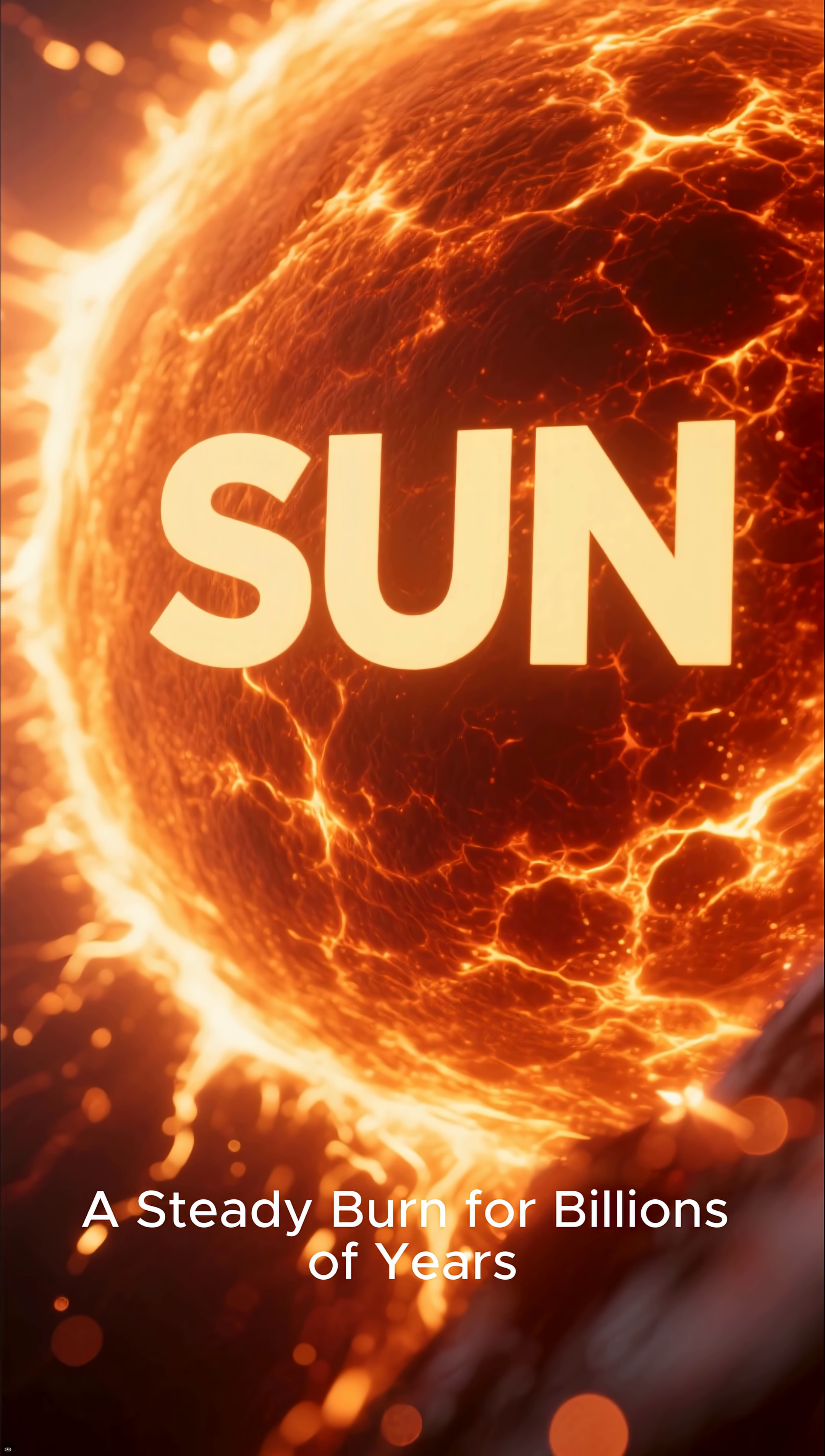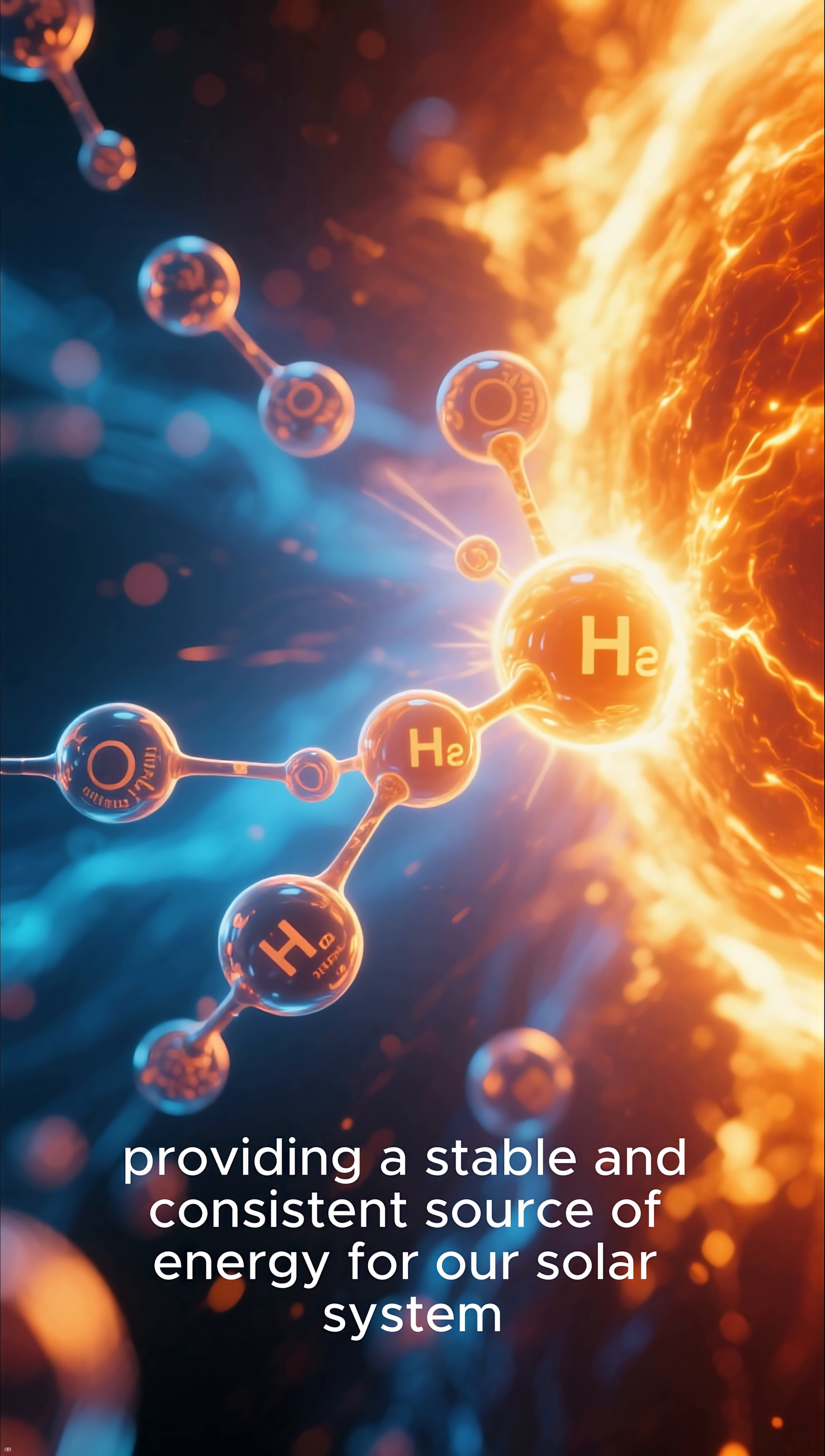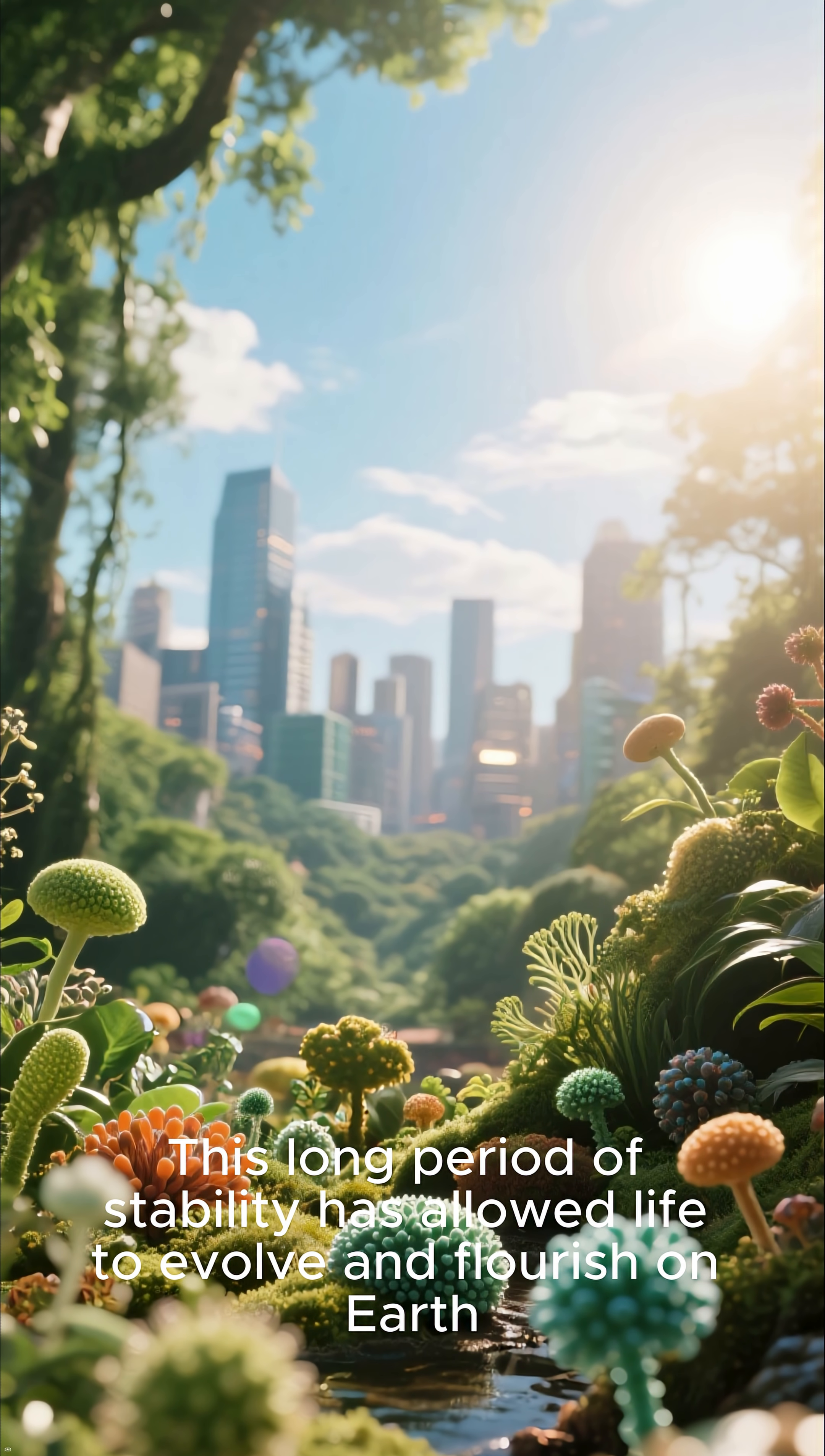A steady burn for billions of years. For the past 4.57 billion years, the Sun has steadily converted hydrogen to helium, providing a stable and consistent source of energy for our solar system. This long period of stability has allowed life to evolve and flourish on Earth.